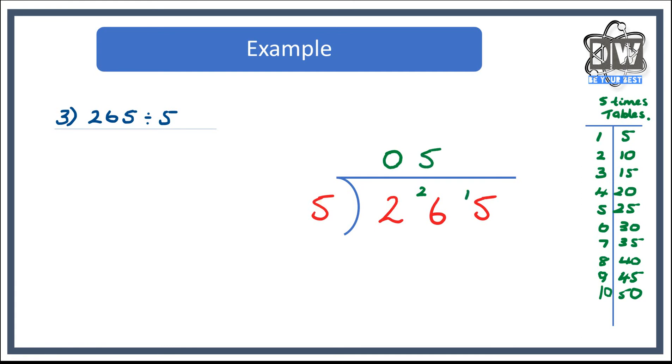Now how many fives go into 15? I look and I can see three. So you might notice on all the examples today we have no remainders at the end, so it's a straight number. Our answer would be 53 on that one.